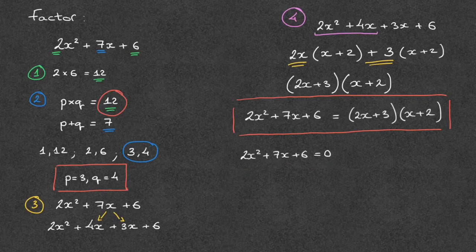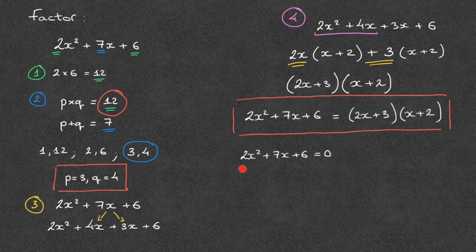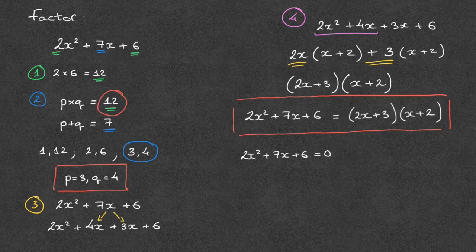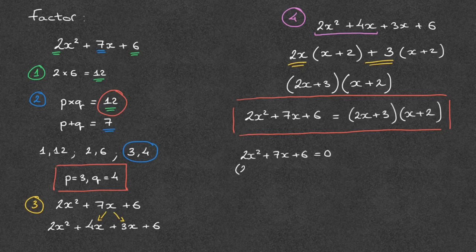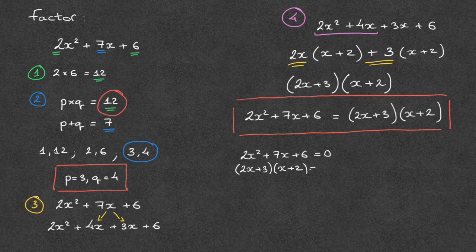Here's how that works. Notice, first of all, that the left hand side of this equation is the same quadratic as the one we just worked with. Keeping that in mind, we can replace the left hand side of this equation by its factored form that we obtained here. In other words, we can rewrite this equation as in parentheses 2x plus 3 times x plus 2 equals 0.